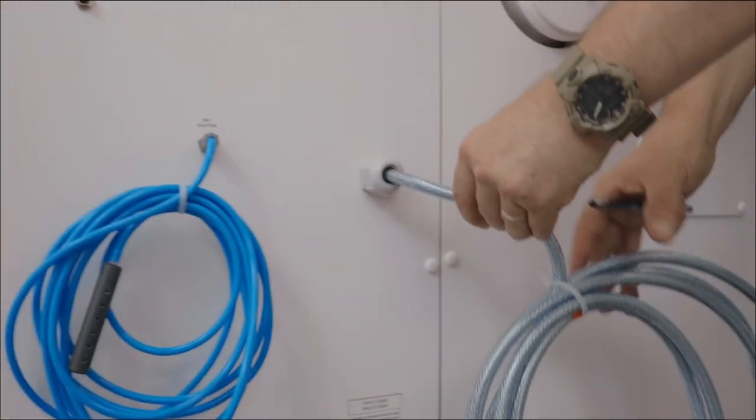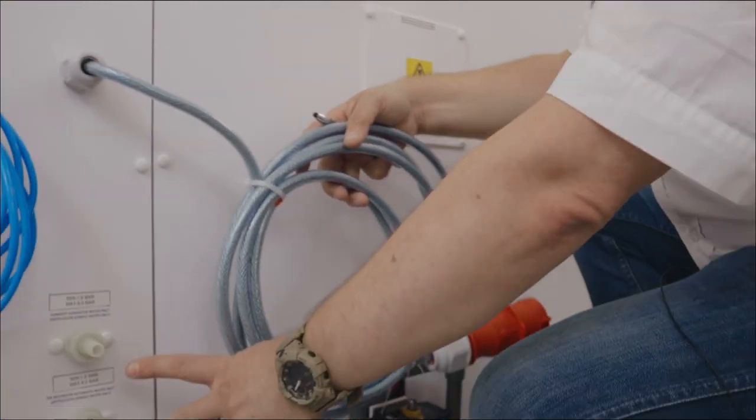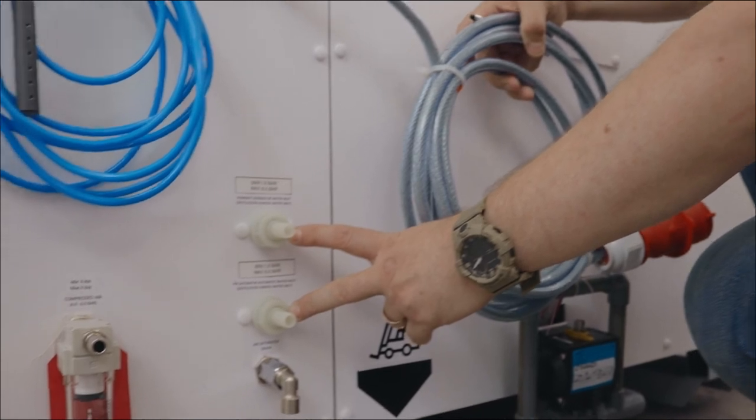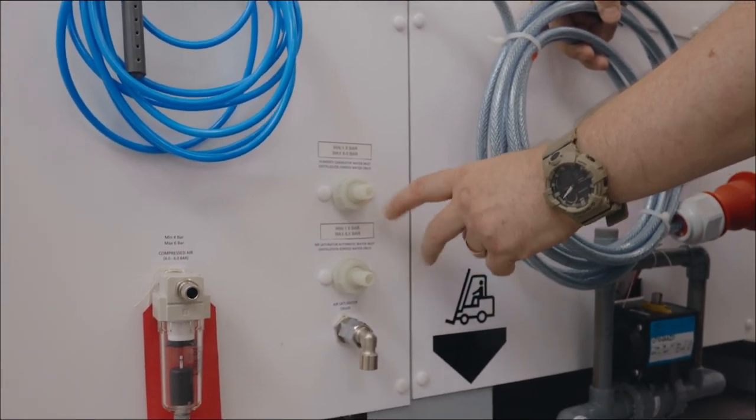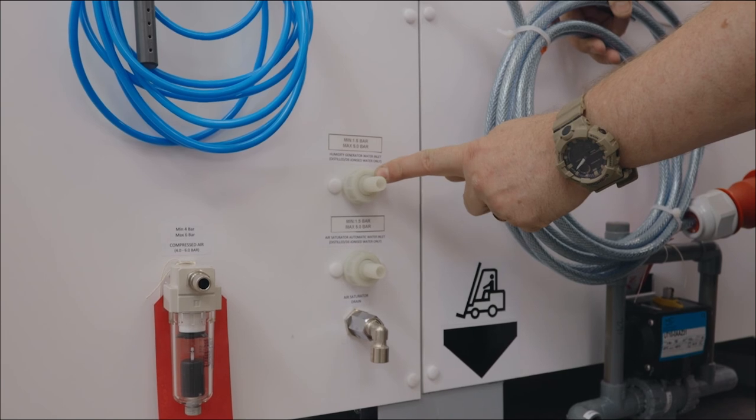We have the mains power cable and below this we have two deionized water inlet connections for the air saturator and humidity generator.